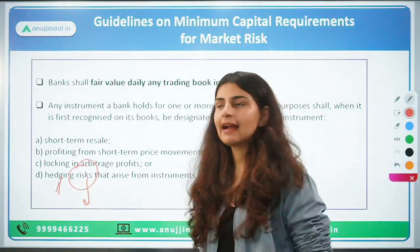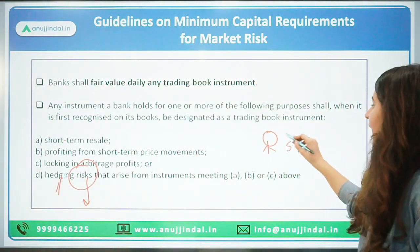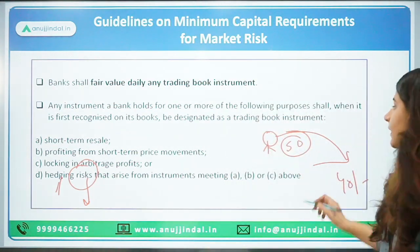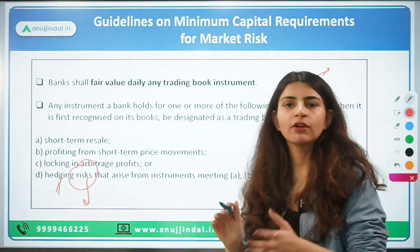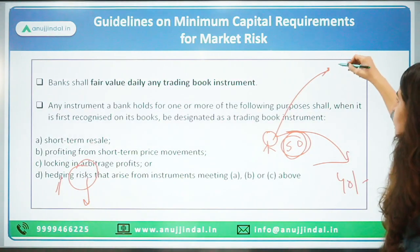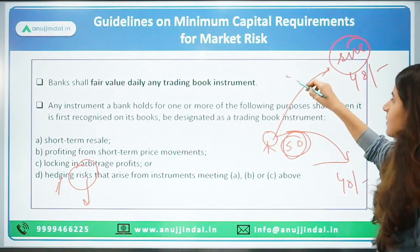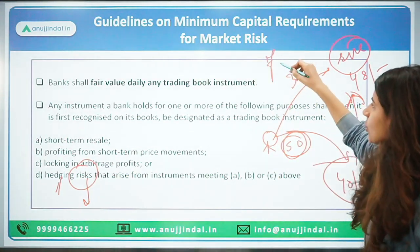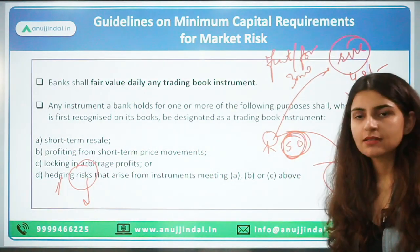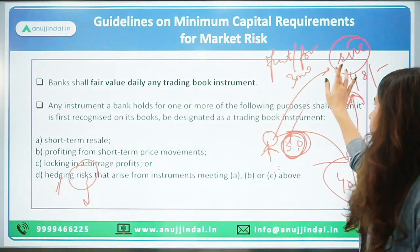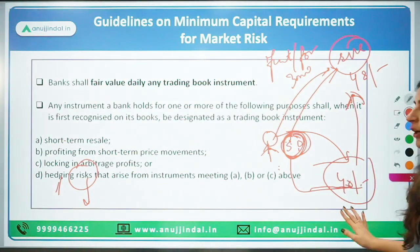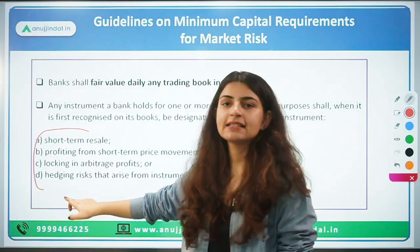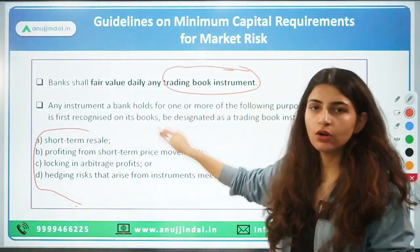For example, if a commodity price is 50 rupees today and is expected to fall to 40 rupees in future, the owner can hedge by entering a forward or futures contract to sell at 48 rupees in the next 3 months. The price may fall to 40, but by hedging you lock in 48. This is hedging the risk. All these instruments — used for short-term resale, price movements, arbitrage, or hedging — will come under trading book instruments.